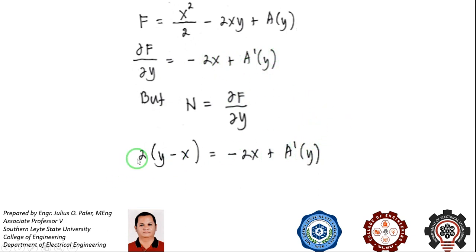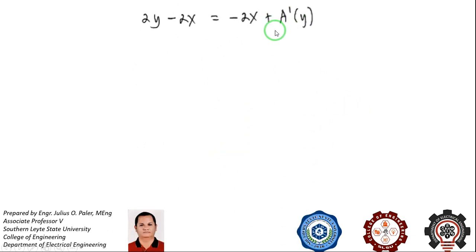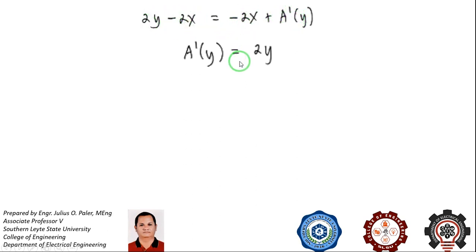Distributing gives 2y minus 2x, so minus 2x cancels on both sides, and it follows that a prime of y is equal to 2y.